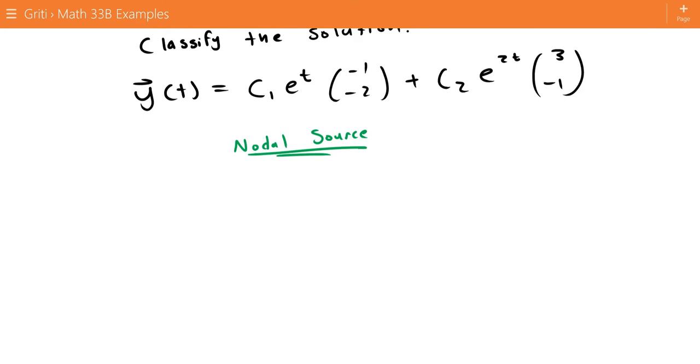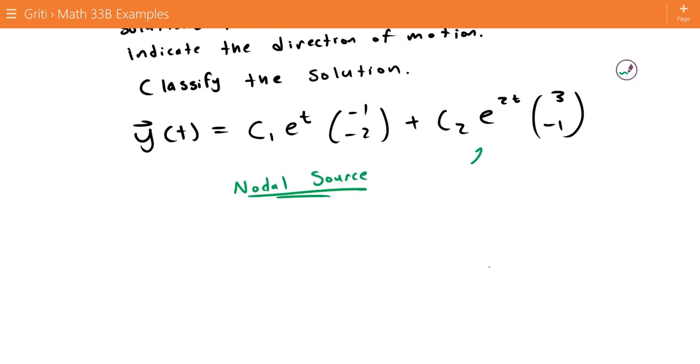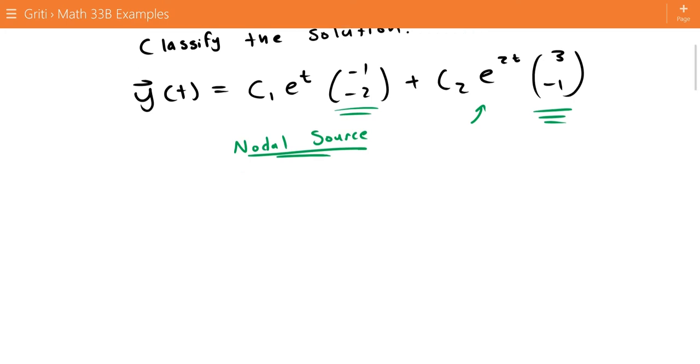And we can see that this is a greater eigenvalue, it's more positive. So as we go to infinity, solutions are going to become parallel to this. And as we go back in time to negative infinity, solutions are going to be parallel to this.